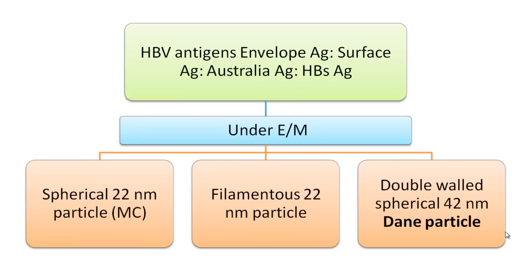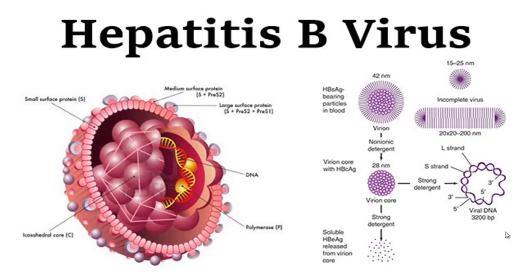The main antigen is the hepatitis B surface antigen, also called the envelope antigen or Australian antigen. Under electron microscopy, in its free form it is available as a 22 nm particle, either spherical or sometimes filamentous. But when seen as part of the whole virion structure, it appears as a double-walled spherical 42 nm particle known as the Dane particle.